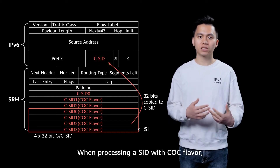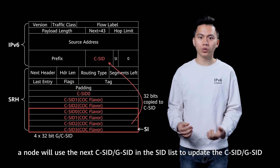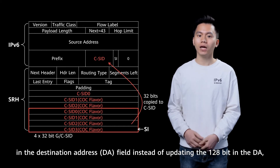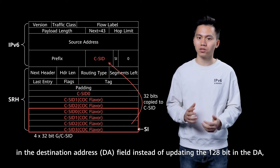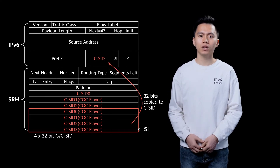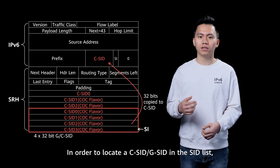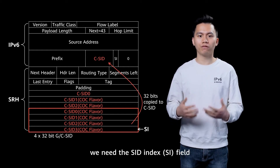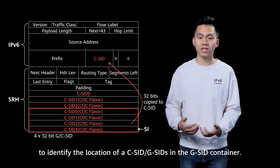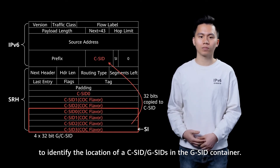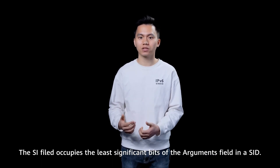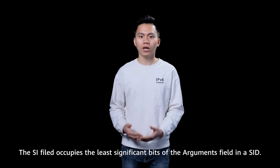When processing a SID with COC flavor, a node will use the next C-SID in the segment list to update the SID in the destination address field, instead of updating the full 128-bit in the DA, as in normal SRV6 processing. So, in order to locate a C-SID in the segment list, we need to define a new term called Segment Index, to identify the location of the C-SID in the G-SID container. The SI field occupies the least significant bits of the arguments field in a SID.